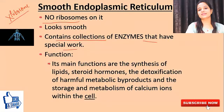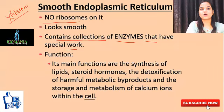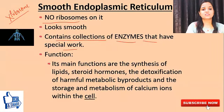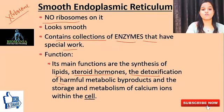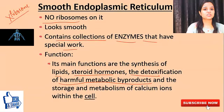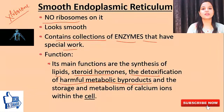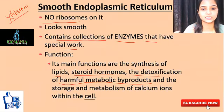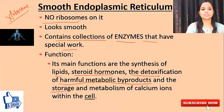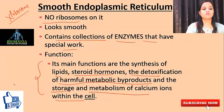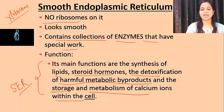The enzymes in the smooth ER come from the rough ER, where all proteins are formed. The main functions of the smooth endoplasmic reticulum are: synthesis of lipids and steroid hormones, detoxification of harmful metabolic byproducts — which is very important because without detoxification harmful substances would accumulate — and the storage and metabolism of calcium within the cell. This is the complete function of the smooth endoplasmic reticulum.